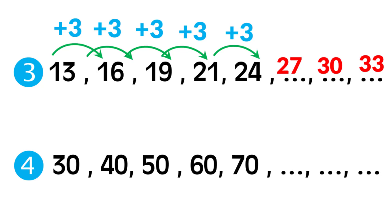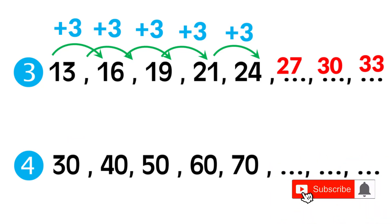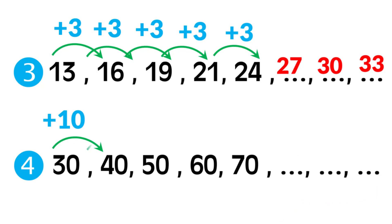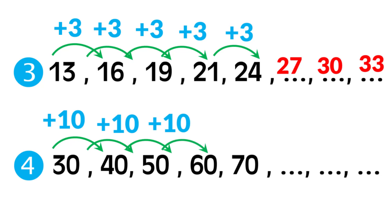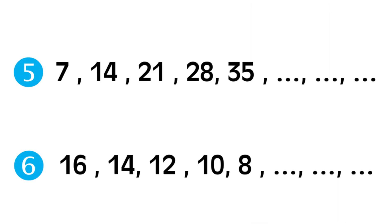Thirty plus three equals thirty-three. Number four: thirty, forty, fifty — it's clearly adding ten. Thirty plus ten equals forty. Forty plus ten equals fifty. Fifty plus ten equals sixty. Sixty plus ten equals seventy. To find the missing, add ten to seventy: eighty. Then ninety. Ninety plus ten equals one hundred.